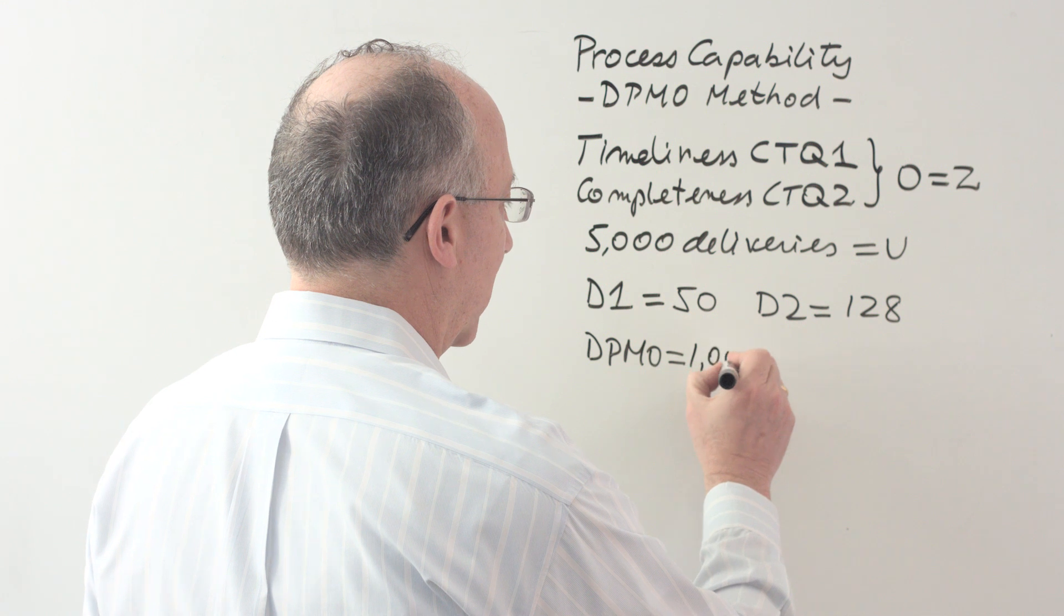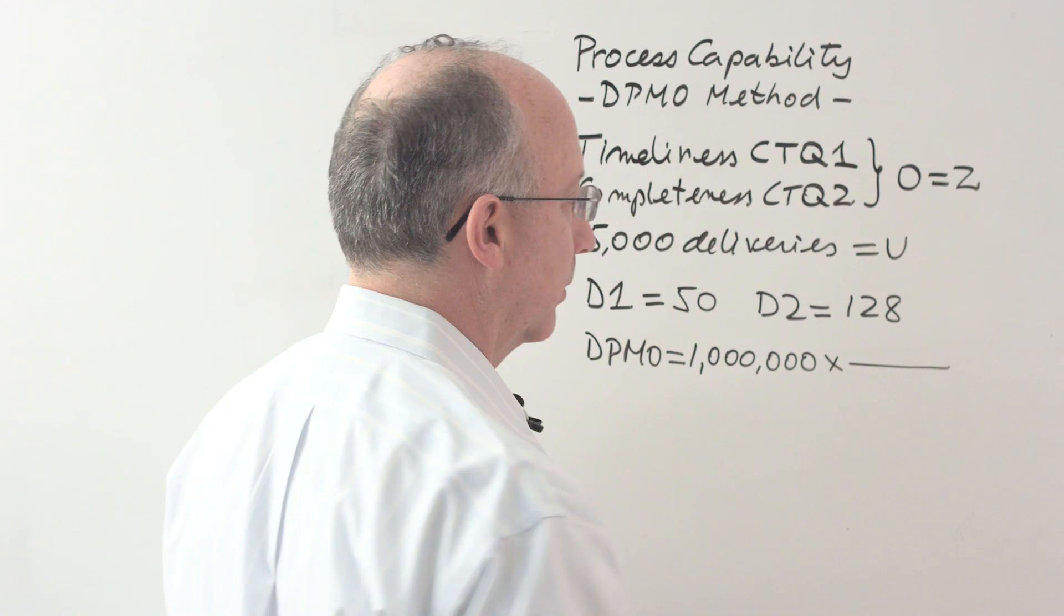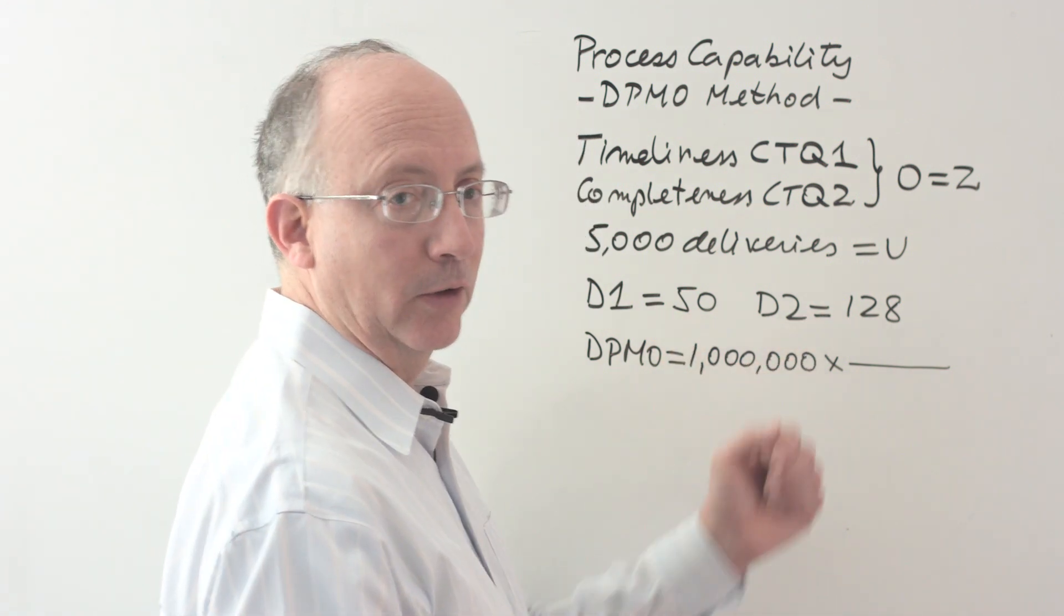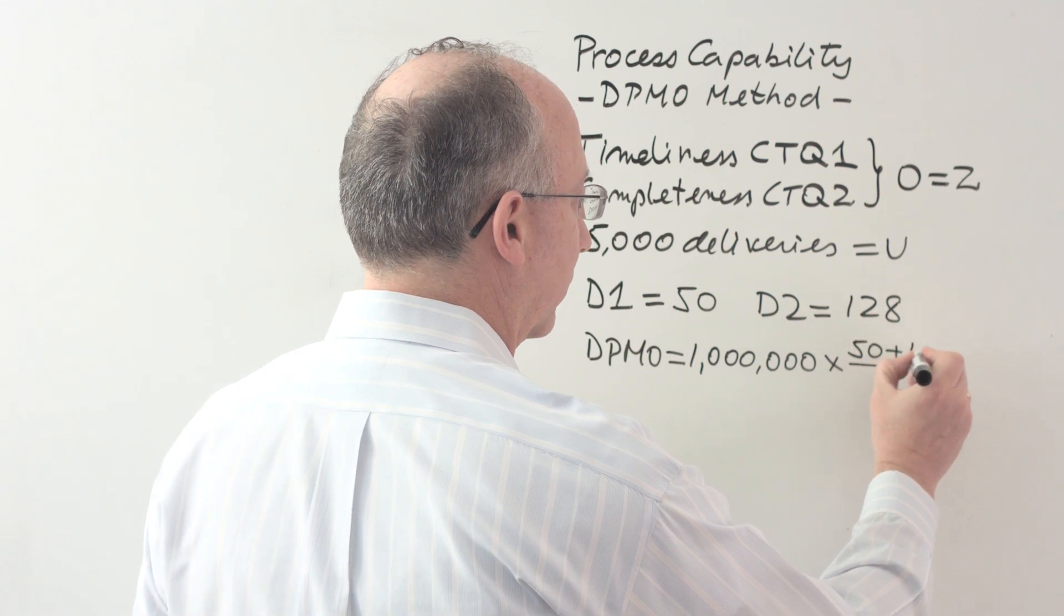In the formula, we actually begin by saying, alright, we're going to have one million times this ratio that I was just discussing, which is going to be the sum of the two errors, or the two defect counts. So, 50 plus 128.